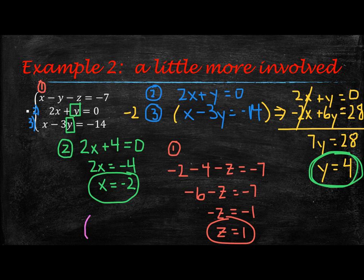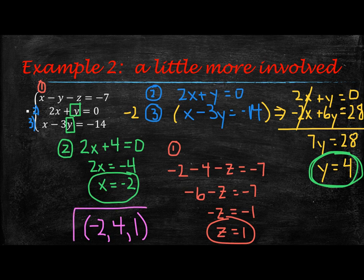You can write your solution as an ordered triple: x value first, negative 2, then the y value, 4, and then the z value, 1. Again, I could plug it back into my original equations to make sure that it works and that I have the correct answer.